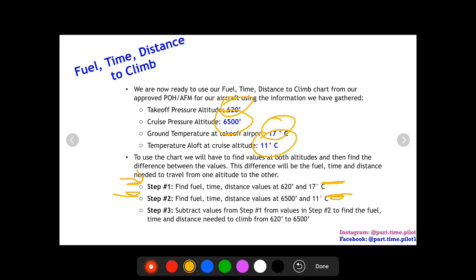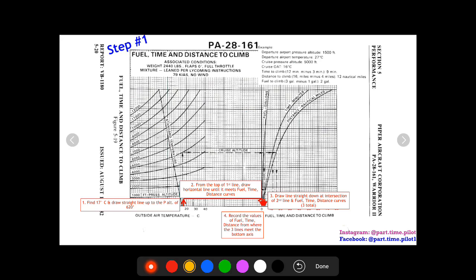Okay, so step one. This is the fuel, time, and distance to climb chart for the PA-28, a Piper Cherokee. You want to make sure that you are using the correct POH or AFM for your aircraft. So once you have located that, you can come over here and use the fuel, time, distance to climb chart and get started.